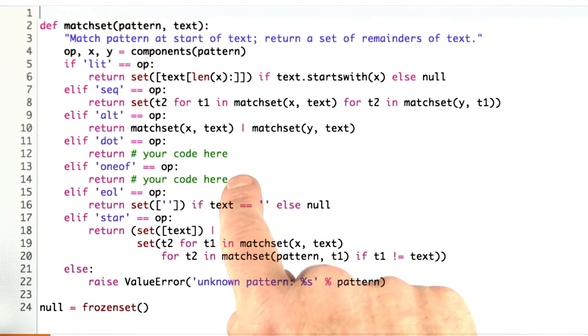Now let's see, you can fill in your code for these two missing cases here. Remember, you're going to be returning a set of possible remainders if the match is successful.